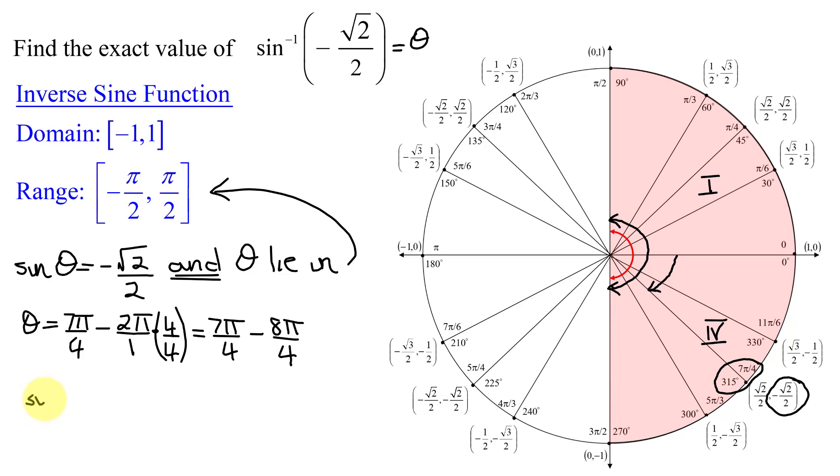So the inverse sine of negative the square root of 2 over 2 equals 7 pi over 4 minus 8 pi over 4, so that's negative 1 pi over 4, or just negative pi over 4.